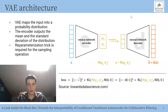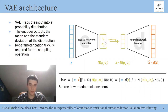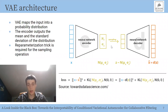This sampling operation can be performed using the reparameterization trick. It consists of sampling an epsilon vector from a standard normal distribution, multiplying it by the standard deviation of the Gaussian distribution being learned, and adding it to the mean of that Gaussian. Thanks to this trick, we are able to train the model with gradient descent, because the sampling operation is not differentiable by design.